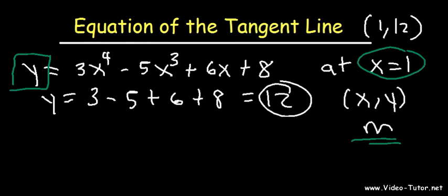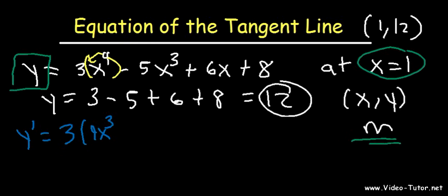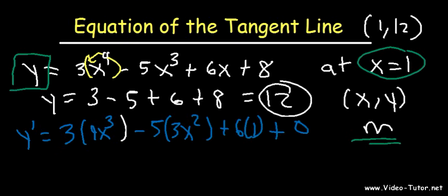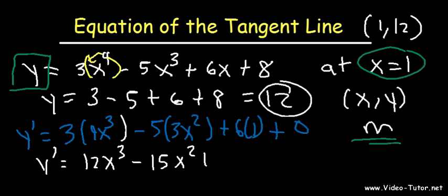So let's go ahead and find the first derivative. y prime is equal to 3 times the derivative of x to the 4th, which is 4x cubed. You move the 4th to the front, and then you subtract 4 by 1, you get 3. Minus the derivative of x cubed, which is 3x squared. The derivative of x is just 1, and for any constant like 8, it's 0. Therefore, y prime is equal to 12x cubed minus 15x squared plus 6.